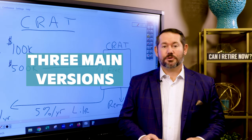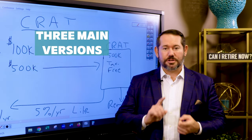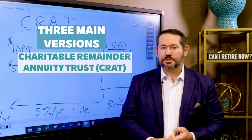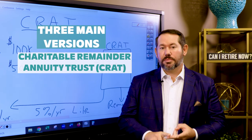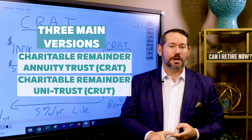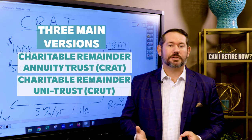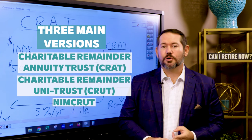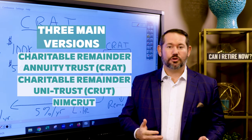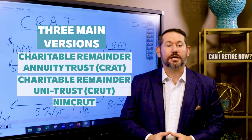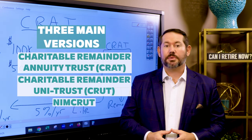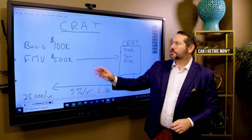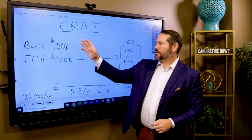There are three main versions: the Charitable Remainder Annuity Trust (CRAT), the Charitable Remainder Unitrust (CRUT), and the NIM-CRUT. The NIM-CRUT sounds a little funny but it can be a very valuable planning tool, and I'm going to cover all three of them today.